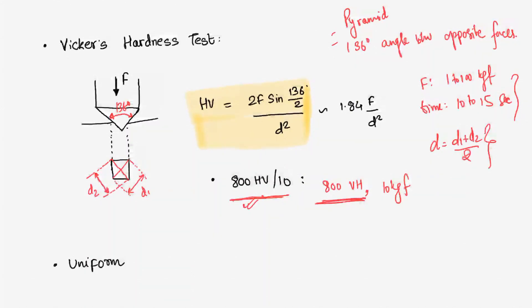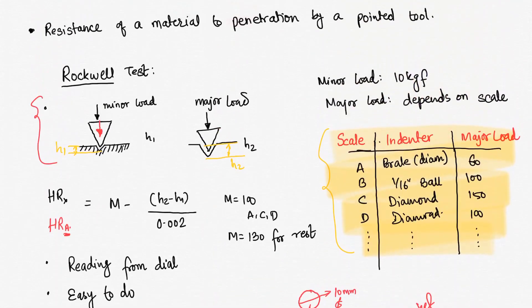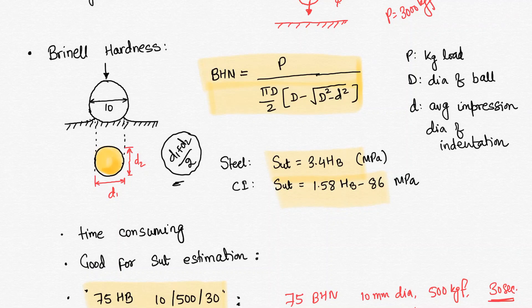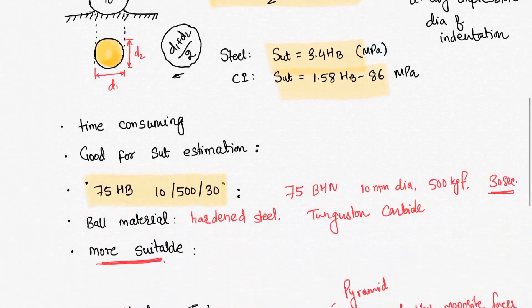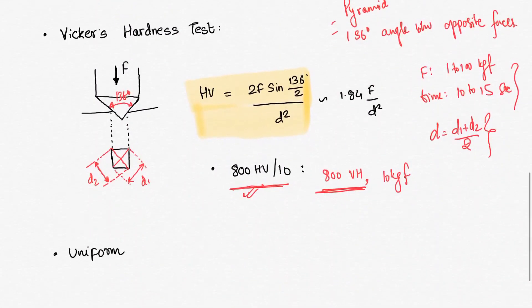So that's all about hardness. We have talked about three tests here. First one was Rockwell test in which it will be a diamond Brale type or ball type indenter, and we define minor load and major load. Then we talked about Brinell test - we use ball type indenter, the surface area and the load define hardness, and usually we can estimate the SUT, but it's time consuming. Third one we talked about Vickers hardness test which has uniform results but it is expensive, and here the indenter is a standard size fixed indenter.